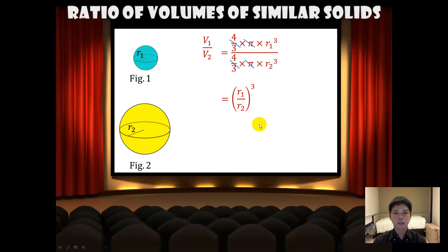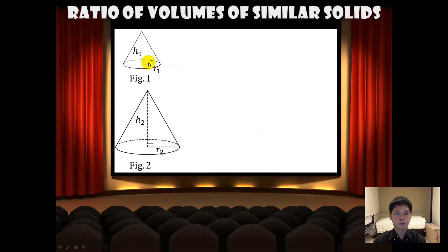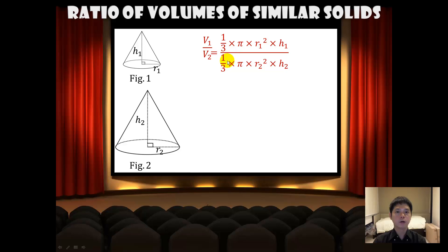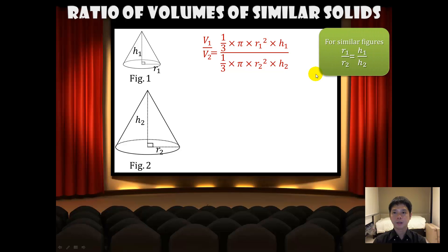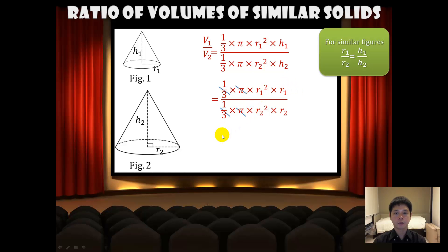Now let us look at two similar cones. V1 over V2 will be equal to (1/3)π r1² h1 over (1/3)π r2² h2. Once again, for similar figures, we can replace h1 over h2 with r1 over r2, and cancelling out the common terms, we will have V1 over V2 equals (r1 over r2) cubed.